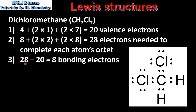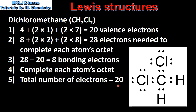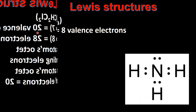Next we subtract step 1 from step 2, which gives us 8 bonding electrons in the molecule. We put the carbon atom in the centre and bond each atom with 2 valence electrons. Step 4 is to complete each atom's octet — each chlorine atom needs 8 valence electrons, so we use the remaining electrons to complete each chlorine atom's octet. Finally, we count the total number of valence electrons in the molecule: there are 20, which matches step 1.